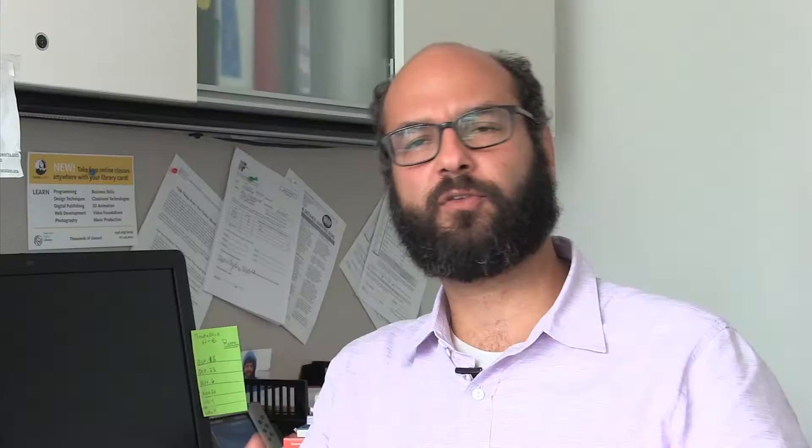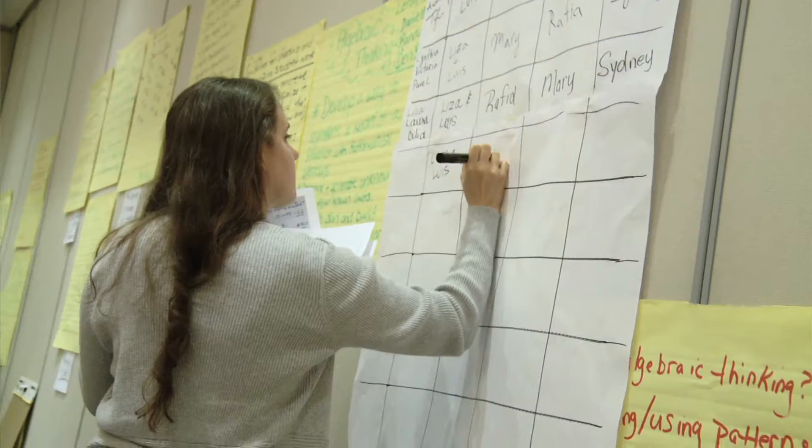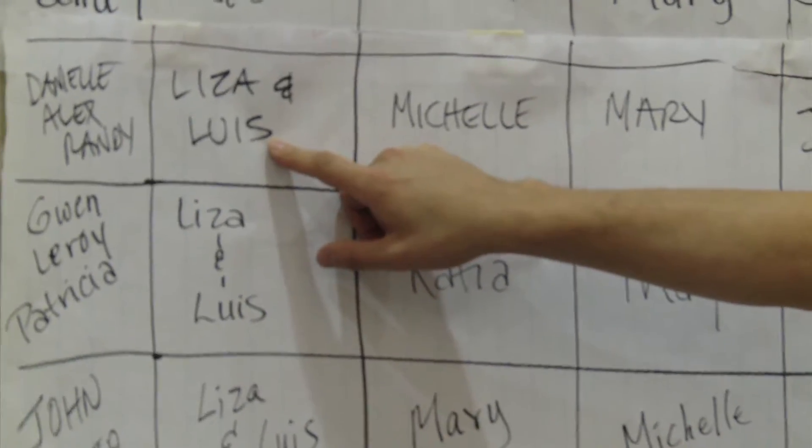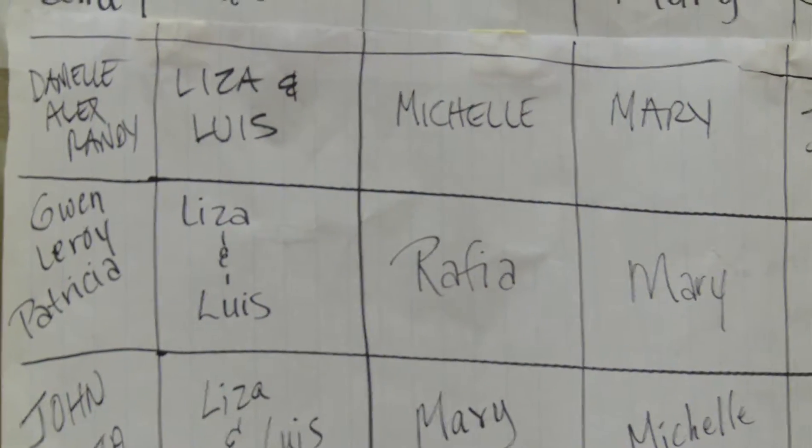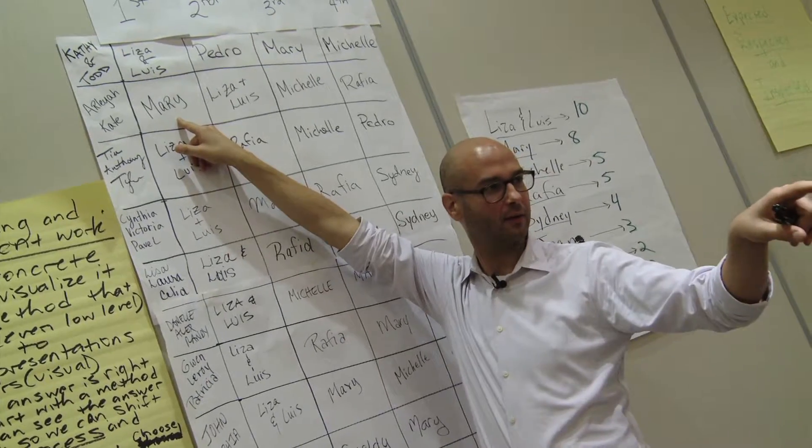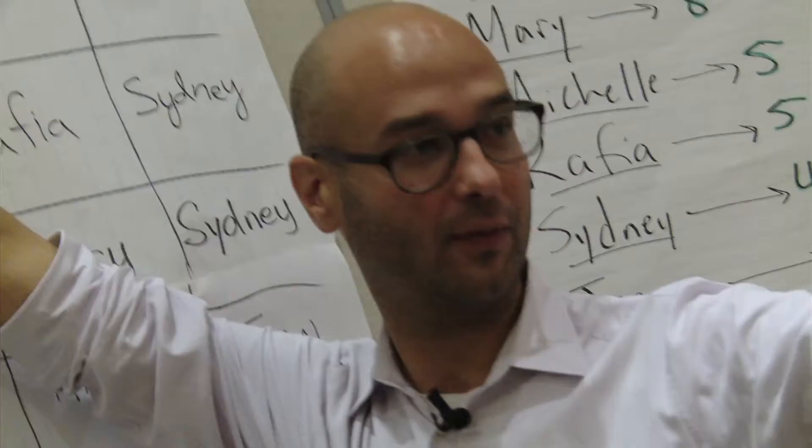The goal was to start the conversation and see what similarities there were — and there were many. It was interesting to see that different groups working in different parts of the room came up with the same thing. As a teacher, you're thinking: what do I want students to get out of this problem? What mathematics do I want them to get? What sense of problem-solving strategies? How do I want to tap into conversations about perseverance? With those questions in mind, you look at student work and think about what's first, second, and third to create this arc of a conversation.